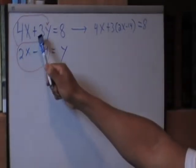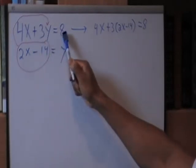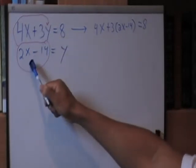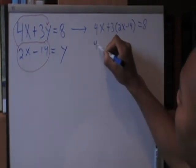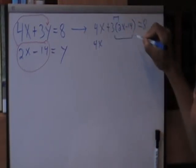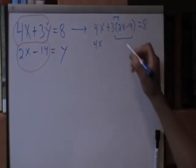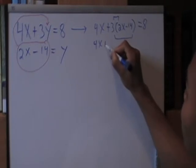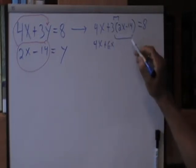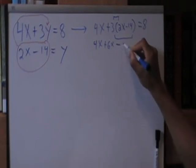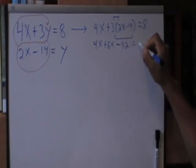So, we just took our first equation and rewrote it exactly as you see it except we replaced y with 2x minus 14. Now, we perform basic algebra. So, we have the 4x stays where it is. We distribute the 3 to remove the parentheses. So, 3 times 2x gives me positive 6x. 3 times negative 14 gives me negative 42. And that all equals 8.